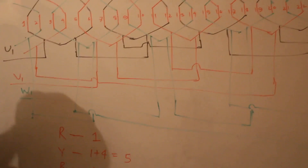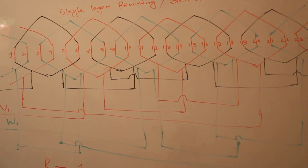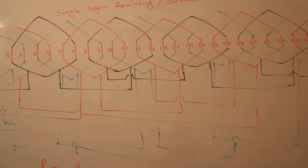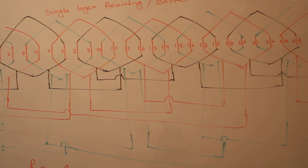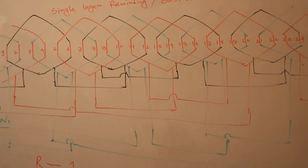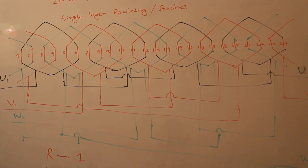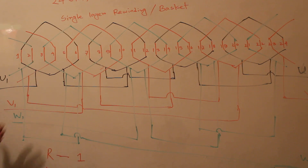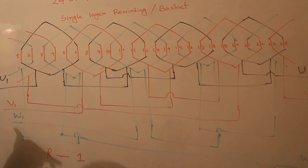Now I complete this diagram. This is a three-phase, four-pole basket winding. If you see carefully and follow the calculation, this diagram and this work is very easy. First, look at the calculation in my previous video — that previous video has the calculation for coil span, total coil, phase difference, and other details. And in this video, I complete the total diagram.